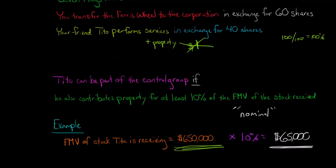So if Tito says, okay, well, I will also contribute $65,000 cash, cash is property. So then Tito would be providing services and property and it wouldn't be a nominal amount of property. And so then Tito would be considered part of the control group.